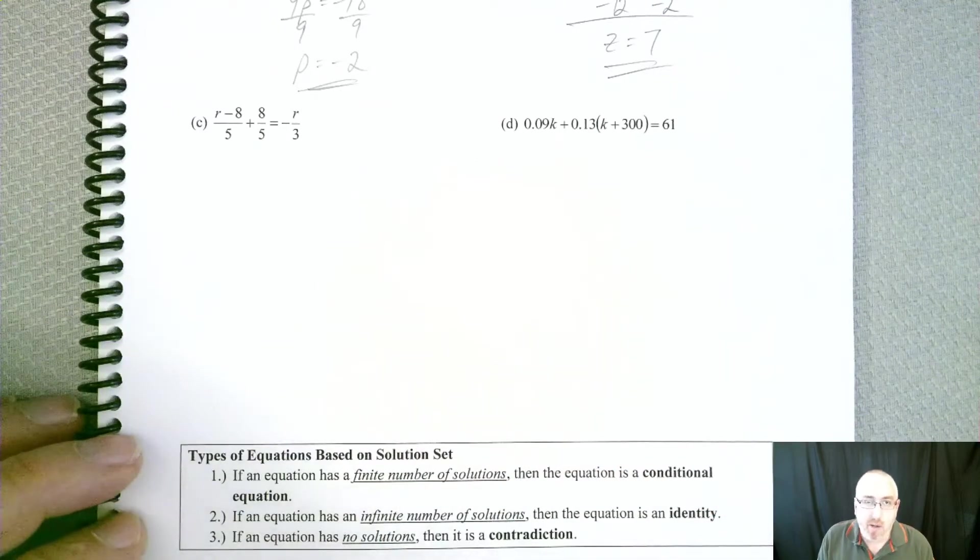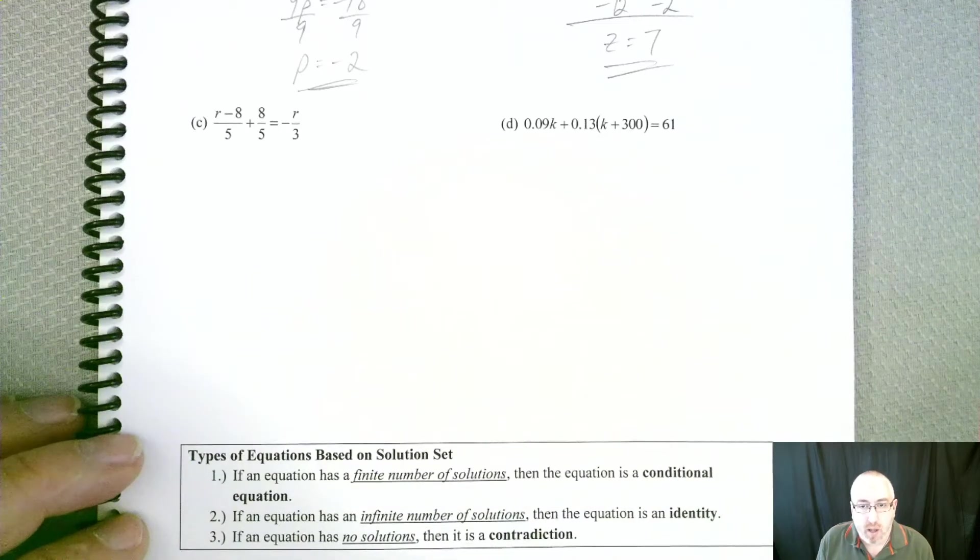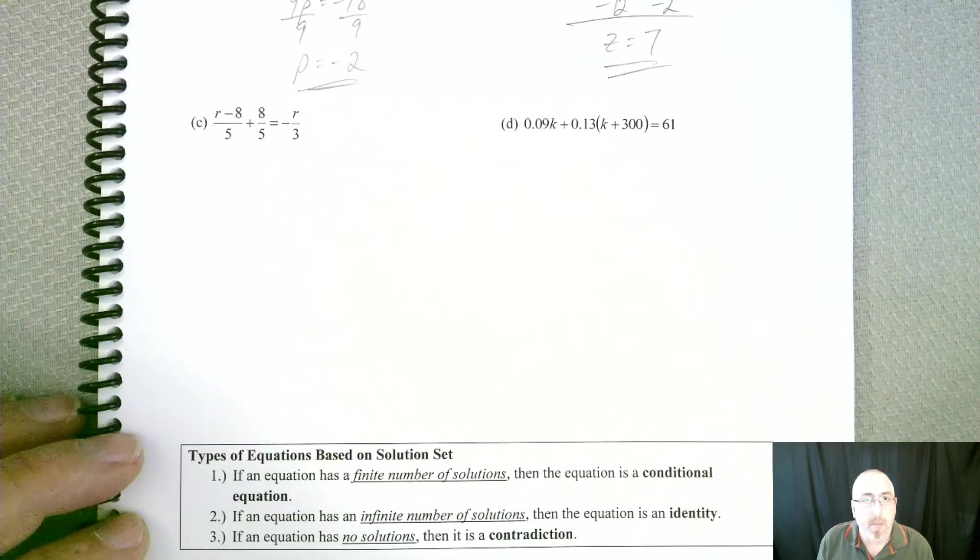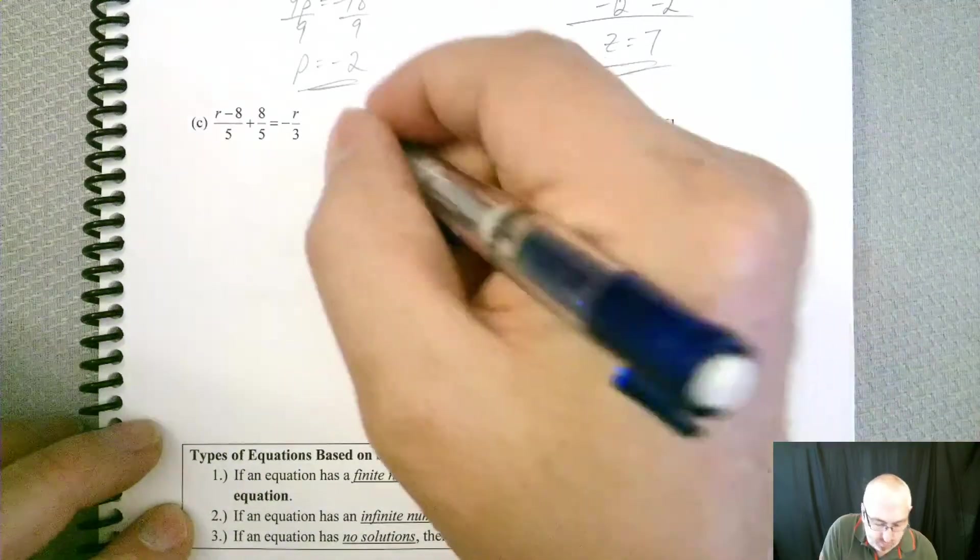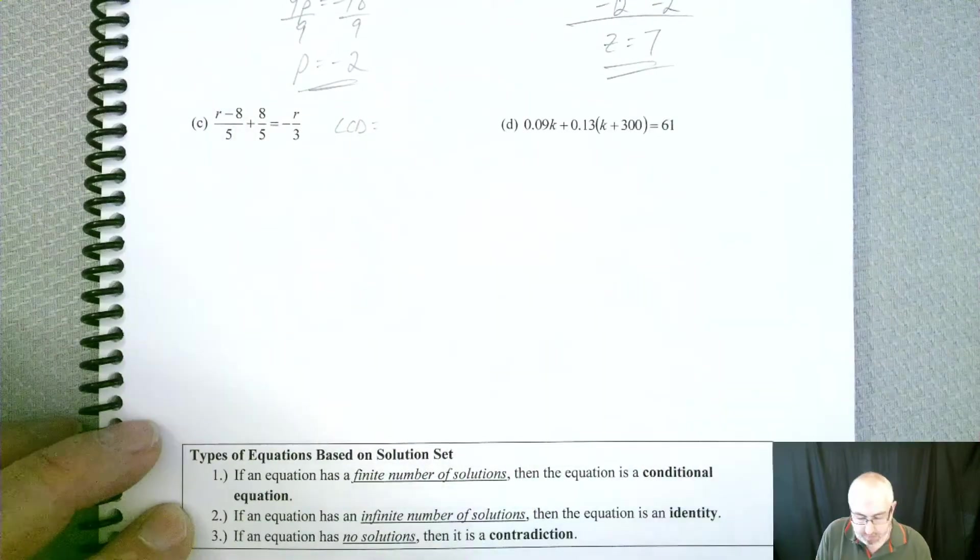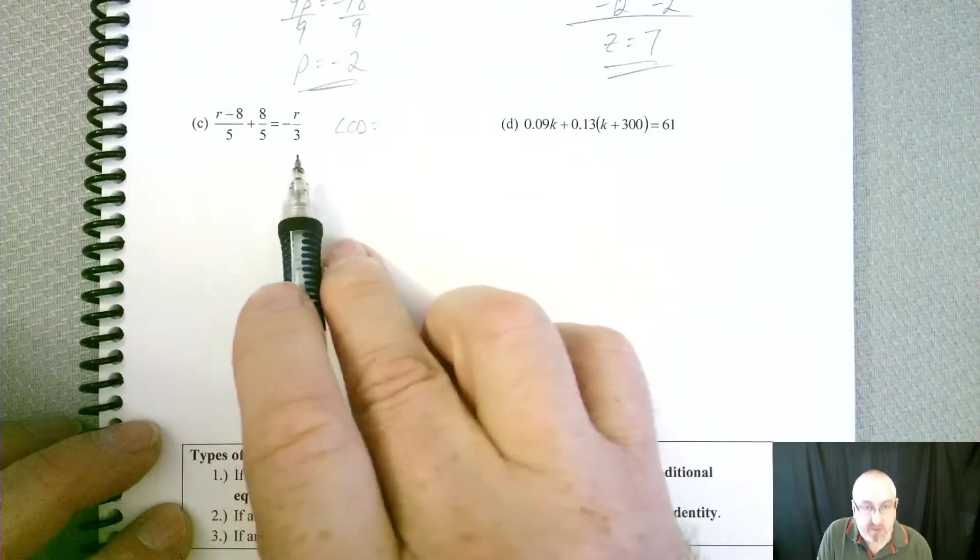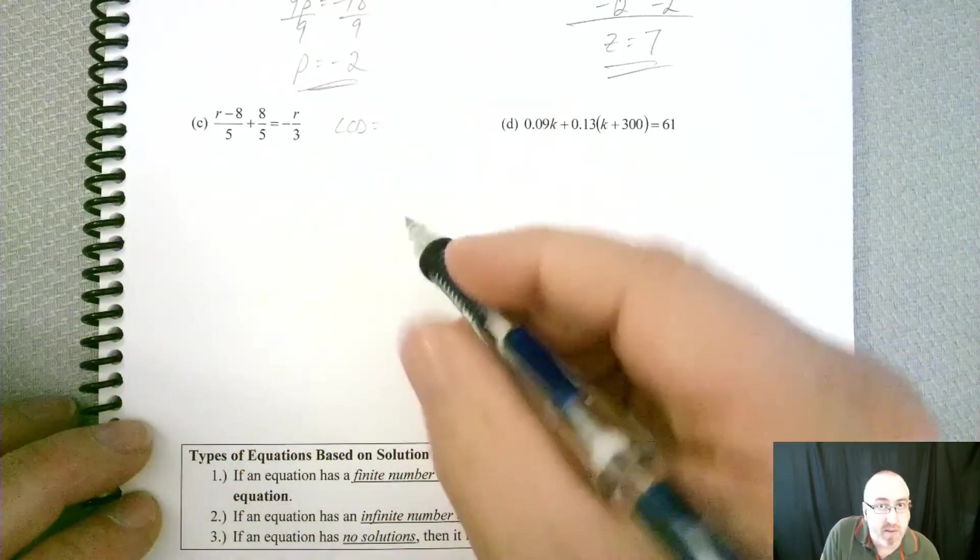Well, I'm going to do a slight twist to that, and I'm going to use the LCD, but I'm not going to multiply by it. So here's the way I would do it. Find your LCD, first of all. So you've got 5s and 3s. Well, LCD in this case is just going to be 15.